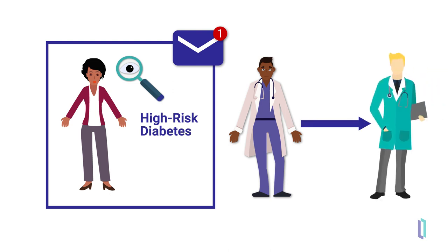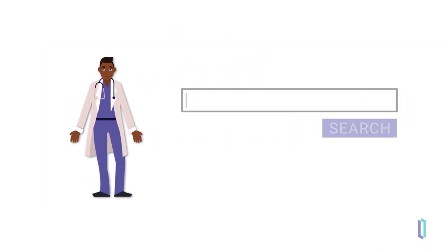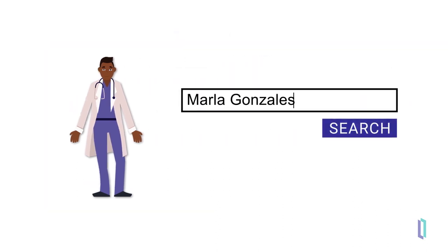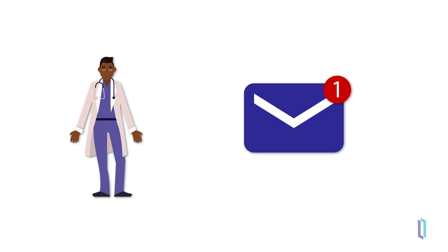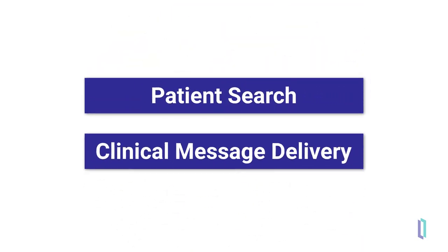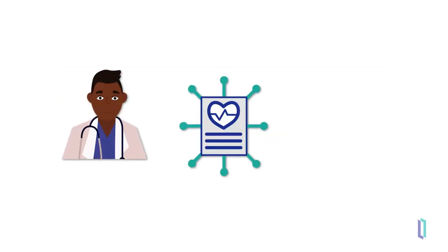From there, he finalizes the review of her records and data and schedules a follow-up visit in a month. For Dr. Gupta, the process of reviewing patient data from diverse organizations is as simple as a patient search or the click of a button that opens Unified Care Record to show the patient data. Clinical notifications concerning patient events make it easy for Dr. Gupta to remain informed of important events that occur outside of his practice. Both the patient search and clinical message delivery capabilities of Unified Care Record enable clinicians to provide better care.